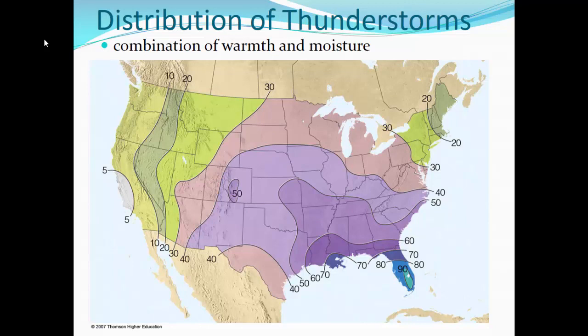The distribution of thunderstorms across North America is pretty straightforward — you're going to look for that combination of warmth and moisture, putting the highest distribution of storms smack dab in the Florida Peninsula from central to south Florida, with much fewer in the intermountain region and the drier regions of the country. You'll notice the maxima around Lake Okeechobee, because lake breezes and sea breezes over south Florida combine to provide quite a bit more thunderstorm activity on an annual basis.